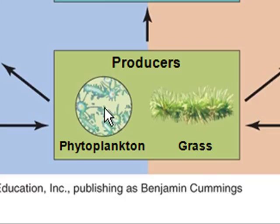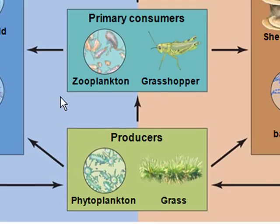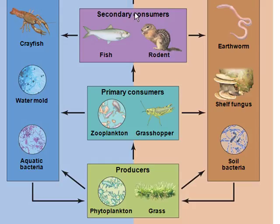Organisms that consume producers — going via the terrestrial route — are primary consumers. That would be a grasshopper, or in an aquatic ecosystem, something like zooplankton, little animals. These are known as primary consumers and are organisms that are herbivores. This is the second trophic level. The third trophic level consists of secondary consumers, which prey on primary consumers.